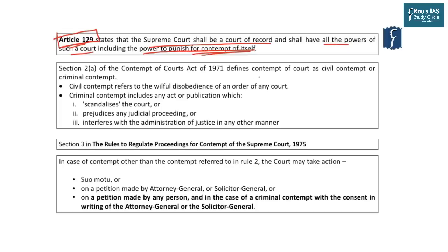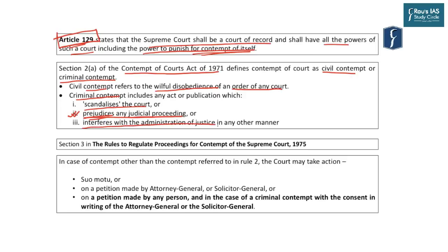The details of how punishment is given come from the Contempt of Court Act 1971. The act defines civil contempt as willful disobedience of an order of any court, and criminal contempt as: scandalizing the court (attributing improper motives to its intent and action), prejudicing any judicial proceedings — which is exactly where contempt could be initiated in this case — and interference with the administration of justice in any other manner. This last phrase is very open-ended and is why the power of contempt must be used very sparingly.